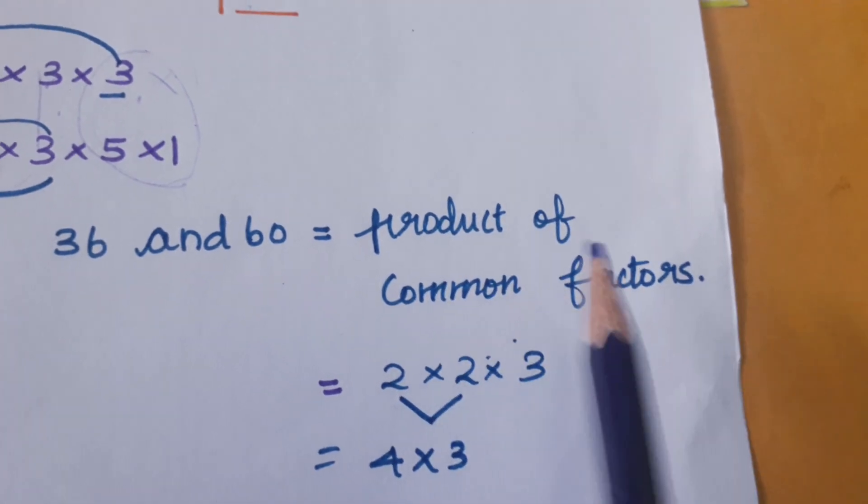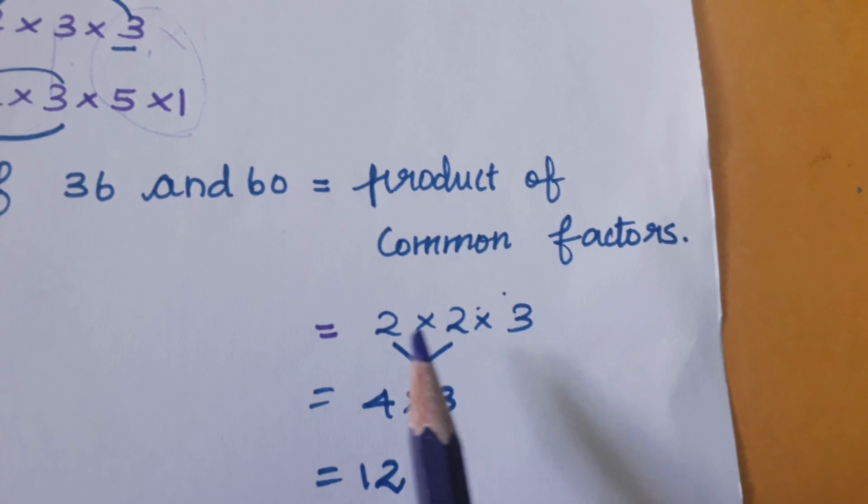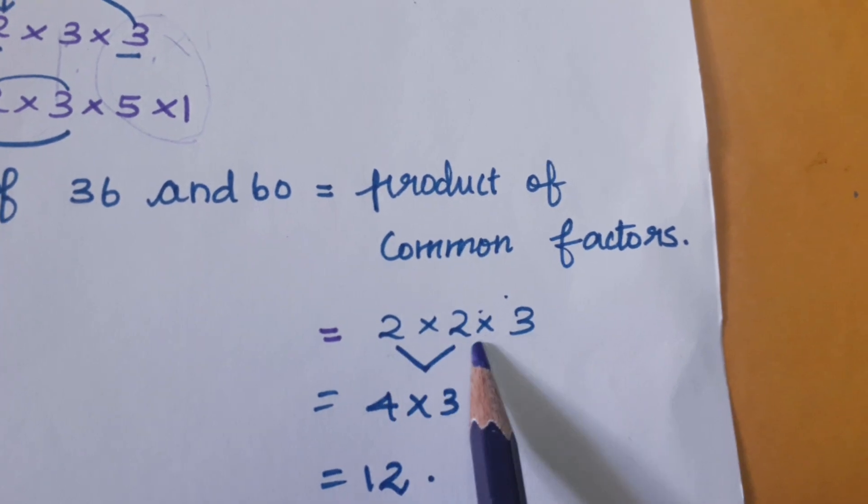The HCF is the product of common factors. We got the common factors: 2 multiply 2 multiply 3, which equals 12.